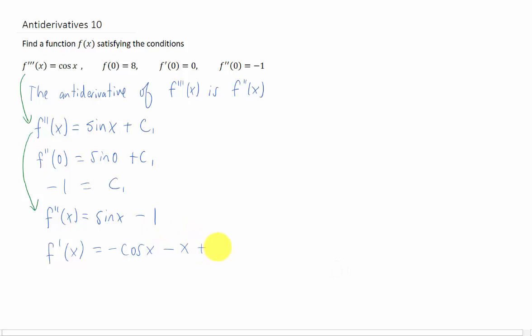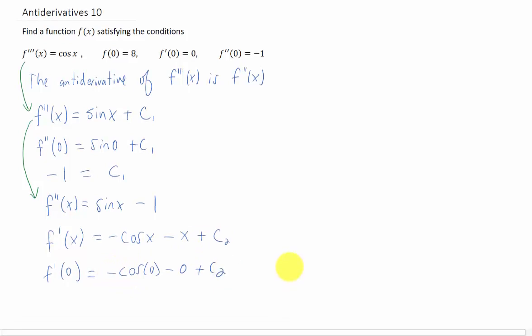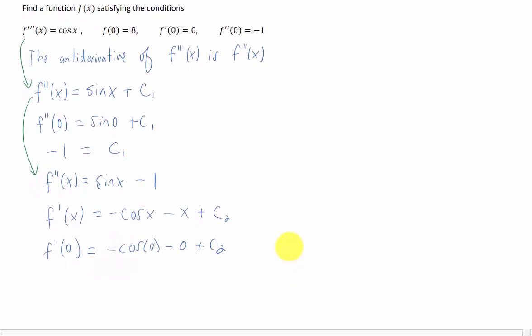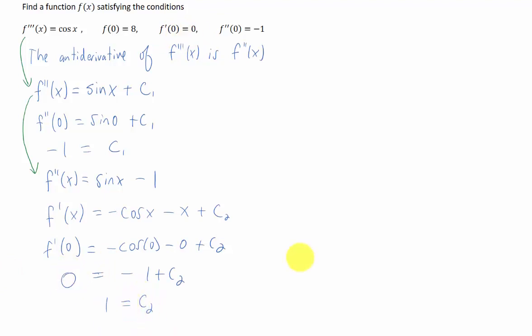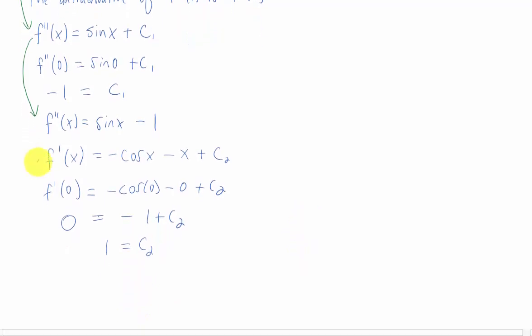Let's put a constant on here and let's determine what that constant has to be based on this initial condition. We know that f prime of 0, if we plug that in right here, is going to be negative cosine of 0 minus 0 plus c2. And we know that f prime of 0 has to be 0, so we get that c2 equals 1.